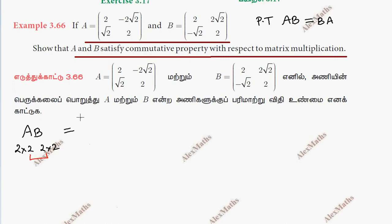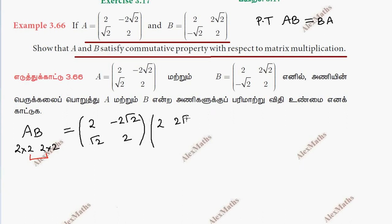First let us write A: A is 2, minus 2 root 2, root 2, root 2, 2. Then write B: B is 2, 2 root 2, minus root 2, 2.